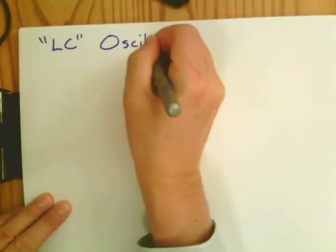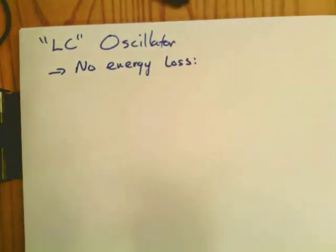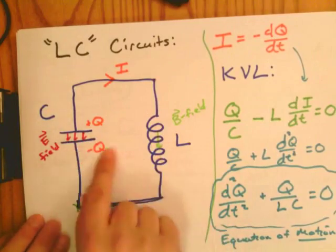So an LC oscillator is an oscillator where there's no energy loss. The energy is basically held in the electric field or the magnetic field and basically moves back and forth between the two.